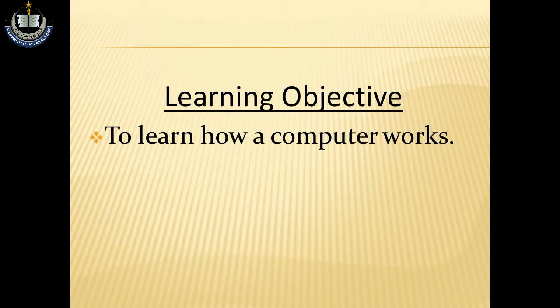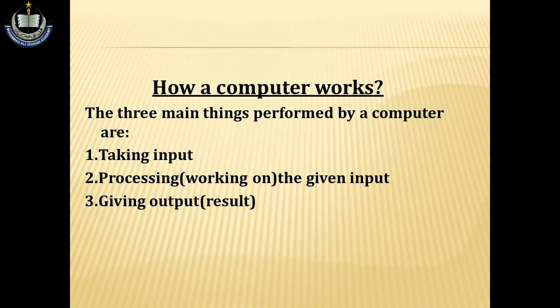In this chapter we are going to learn how a computer works. The three main things performed by a computer are: number one, taking input; number two, processing, working on the given input; and number three, giving output result.